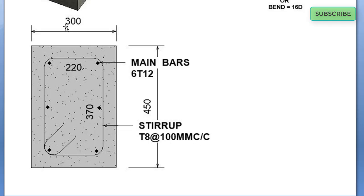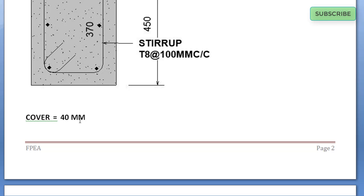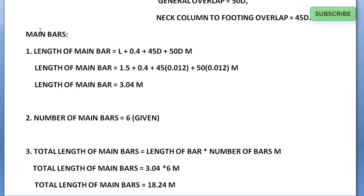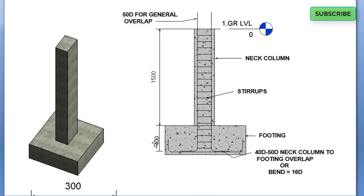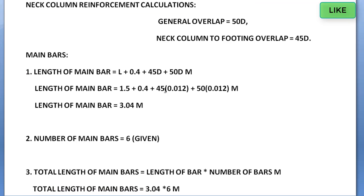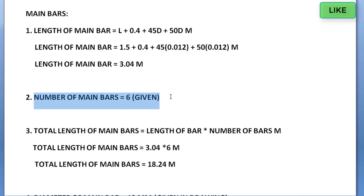The stirrups are 8 mm at 100 mm center-to-center spacing, with 40 mm cover. So from 300 mm length, subtracting 40 plus 40 equals 80, giving 220 mm; from 450 mm, subtracting 80 gives 370 mm. Now for the main bars, the length of main bar equals L plus 0.4 plus 45d plus 50d. This accounts for L, the 0.4 m anchorage, the 45d overlap below, and 50d overlap above. Substituting values, the length of main bar equals 3.04 meters.